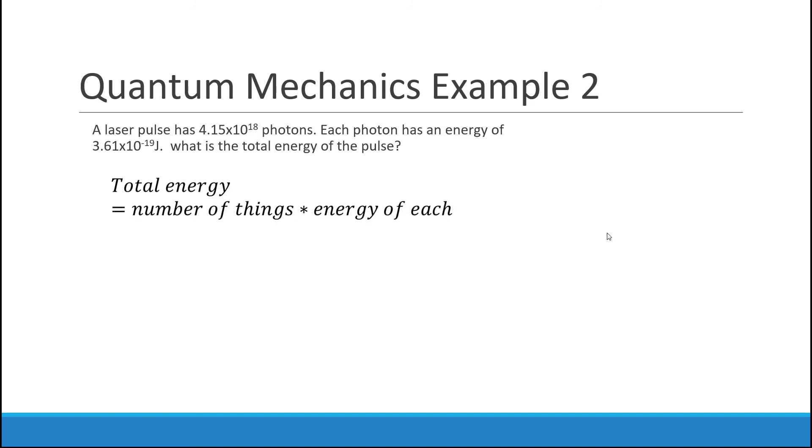So here we're going to take our total energy, and that's what we're solving for. So we're going to do that by taking our number of things times by our energy of each, just like we took our number of candy times by the calories in each candy. This gives us 4.15 times 10 to the 18th photons, times by 3.61 times 10 to the negative 19th joules, to give us our total energy of 1.5 joules.